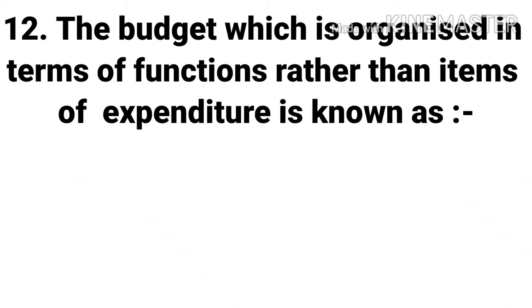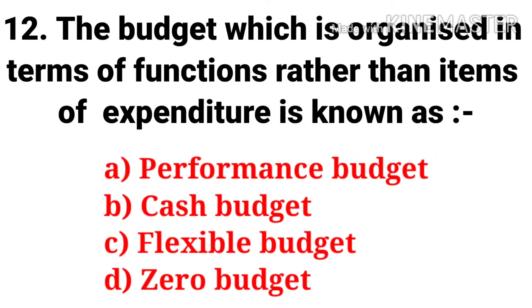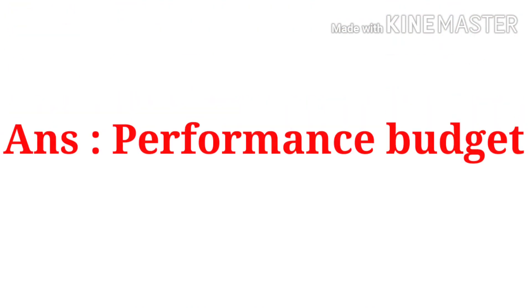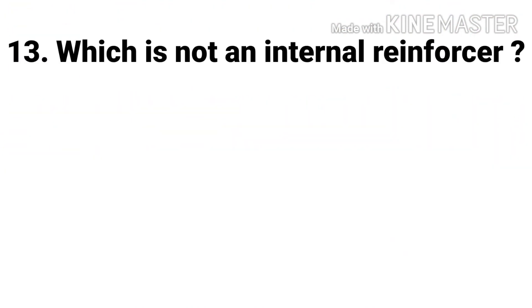Question 12: The budget which is organized in terms of functions rather than items of expenditure is known as — the options are: performance budget, cash budget, flexible budget, and zero budget. The answer is performance budget.